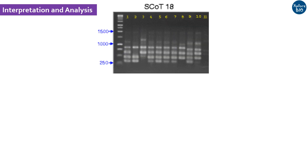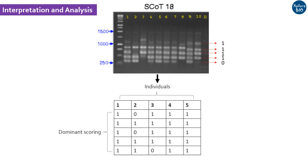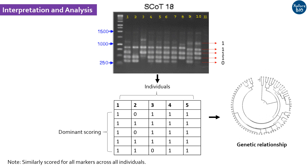After PCR amplification, amplicons in the range of 200 to 1500 base pairs are usually obtained, but this may vary. All clearly amplifiable bands are scored, which is called dominant scoring. Usually, the presence of a band is denoted by 1 and absence by 0. Based on this, genetic relationships among individuals are established using various analysis software. Some primers may not amplify in some plant species, or may not produce a clear amplification profile — in such cases, annealing temperature may be increased or decreased by 2 to 3 degrees to get clearer bands.